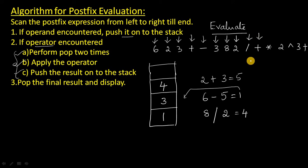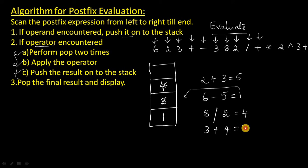And what is the next one? That is plus. Plus is an operator. So remove this 4 from the stack and remove this 3 from the stack, and apply the plus operator. So what you get is 7. Add this 7 to the stack. Remove the 3 and the 4, and add the 7 to the stack.